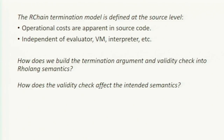How do we build the validity checks into the evaluation of a program, and how does that affect evaluation given that we're concurrent? If I have to alter my program to deduct a counter, then by nature of providing the proof I've altered how my program runs. We want to minimize that as much as possible.